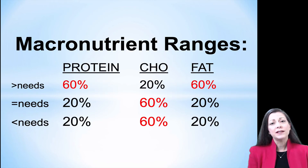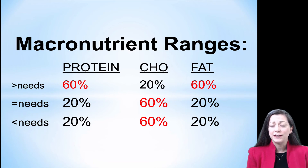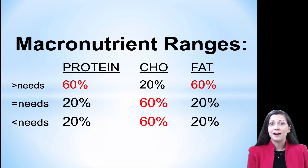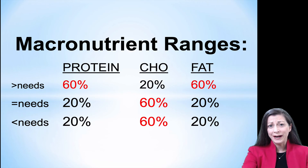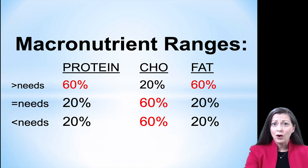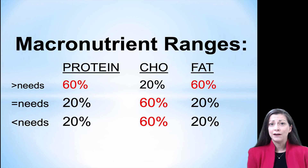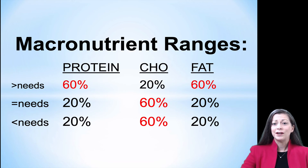When looking at macronutrient ranges — which are very important to calculate when dismantling a diet — you need to understand how much protein, carbohydrates, and fat are recommended, whether this is appropriate for the client's medical conditions, and how it might affect nutrient oxidation. More than 60% of the diets reviewed were recommending protein greater than the person's needs and carbohydrates equal to or less than their needs. More than 60% were also recommending fat intakes greater than recommended needs — a high fat, low carbohydrate combination that sets someone up for improper oxidation of fat nutrients.